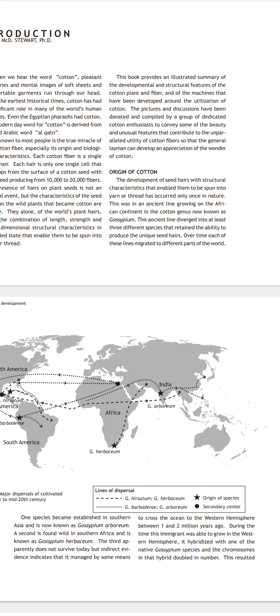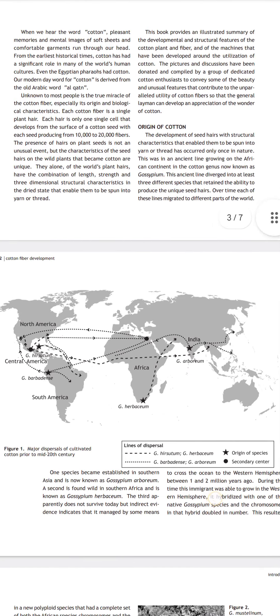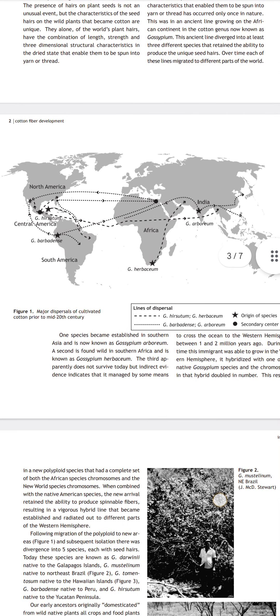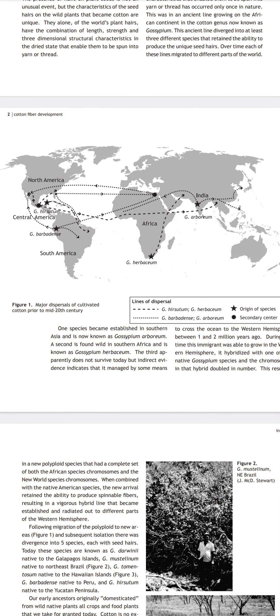The chromosomes then doubled in that hybrid species. This resulted in a new polyploid species, carrying a complete set of both African species chromosomes and new world species chromosomes. When these two combined with the native American species, the new arrival retained the ability to produce spinnable fibers, resulting in a vigorous hybrid line that became established and radiated out to different parts of the western hemisphere.